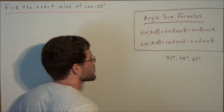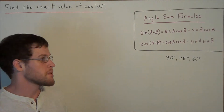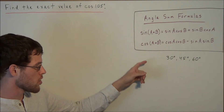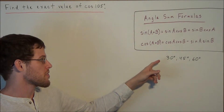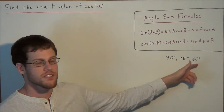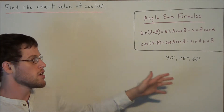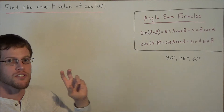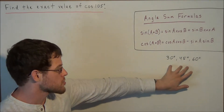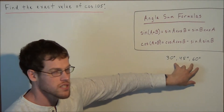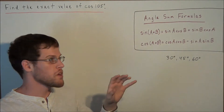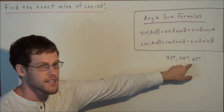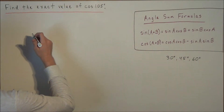The reason why we want to select two of these angles is because we know the exact value of sine and cosine at 30 degrees, 45 degrees, and 60 degrees. So therefore we want to break 105 degrees into two pieces from this list, because we know the sine and cosine of these exact angles.